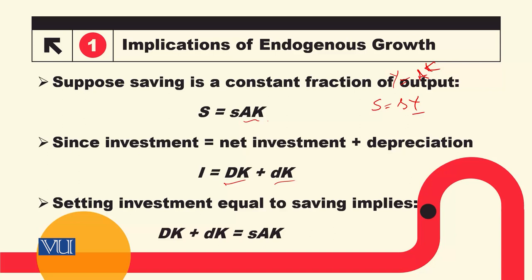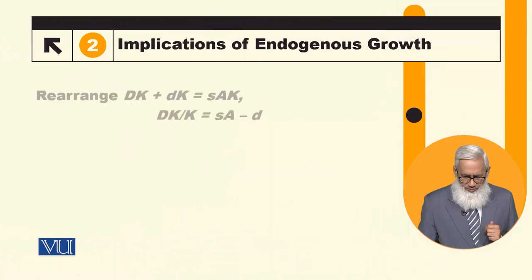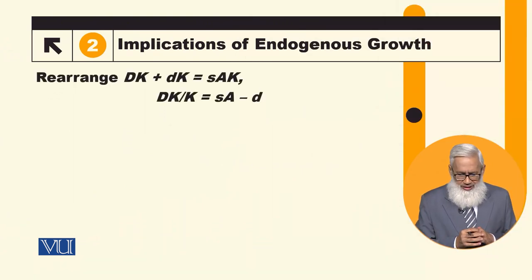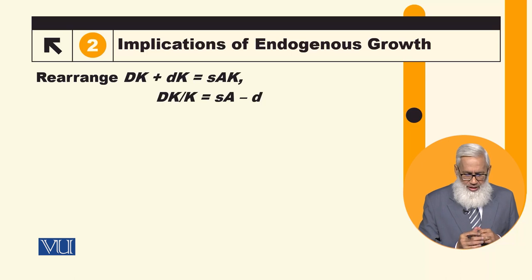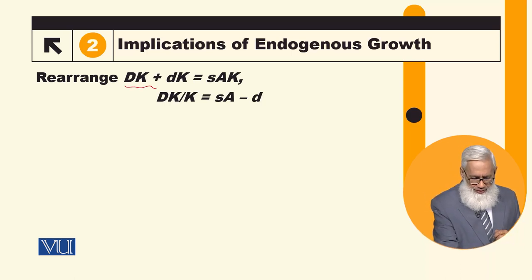We have investment: capital delta K (net investment) plus small d (depreciation rate), and this should be equal to total saving. Saving we have defined as s times y, and y is equal to ak. So investment equals s times ak.